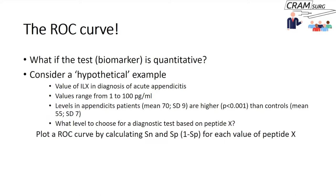For example, if an ultrasound for right iliac fossa pain tells you it is appendicitis or it isn't, you have a binary answer and can proceed with your management pathway. Similarly, a biopsy is either positive or negative for cancer. But what if the test is quantitative — a number on a scale? Consider a new interleukin, let's call it interleukin X, measured in serum for acute appendicitis, with values ranging from 1 to 100 pg/mL. Studies show interleukin X is higher in appendicitis patients compared to controls.